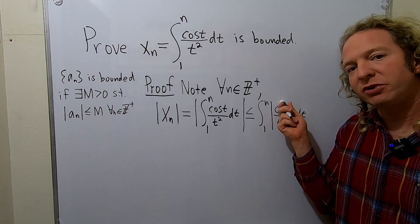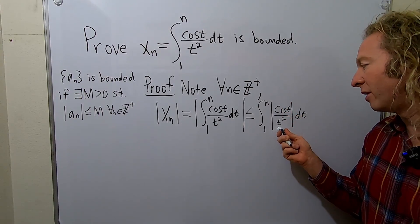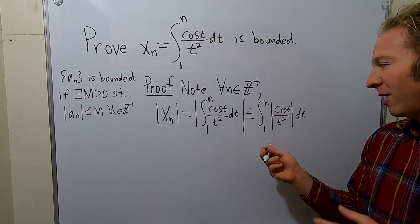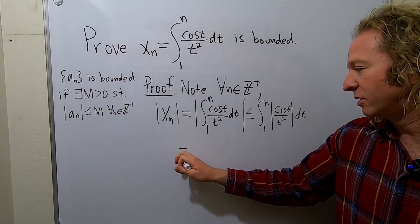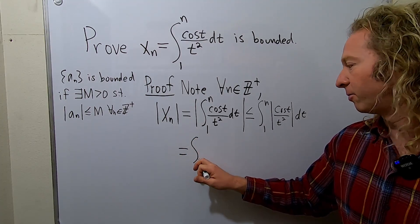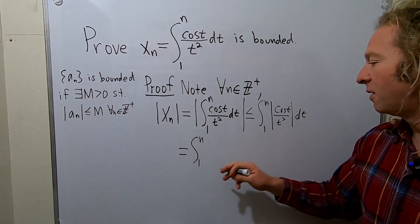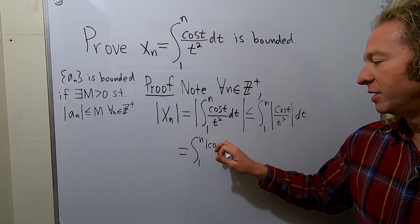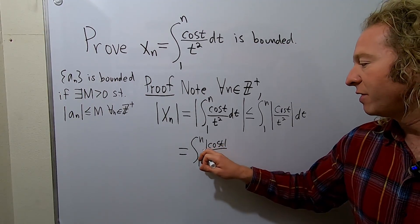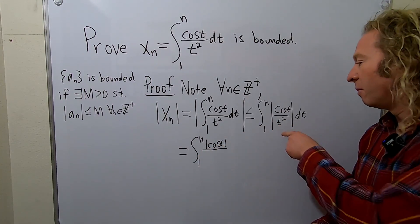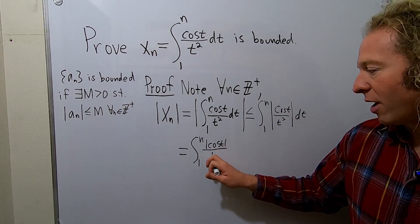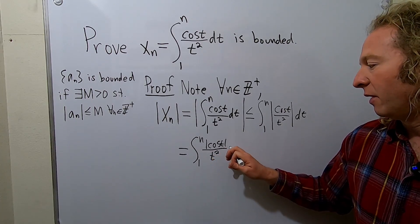Now you have the absolute value of cosine over the absolute value of t squared. So what you can do is you can take the absolute value of each piece. This is equal to the definite integral from 1 to n. Then we have the absolute value of cosine t over the absolute value of t squared. But t squared is positive, so we can drop the absolute value there. Then we have dt.